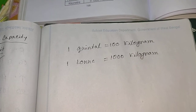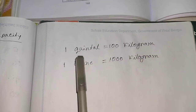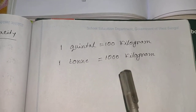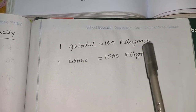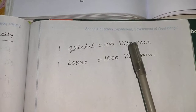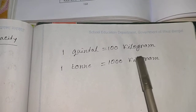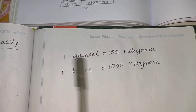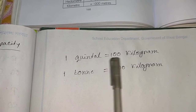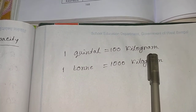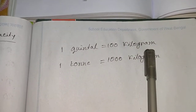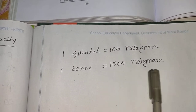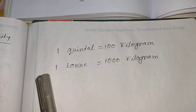To measure a very large mass, we use quintal and ton. One quintal is equivalent to 100 kg, and one ton is equivalent to 1000 kg.